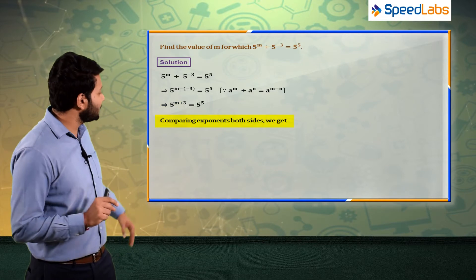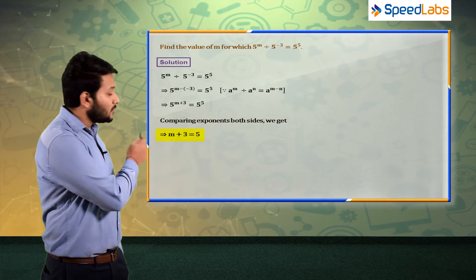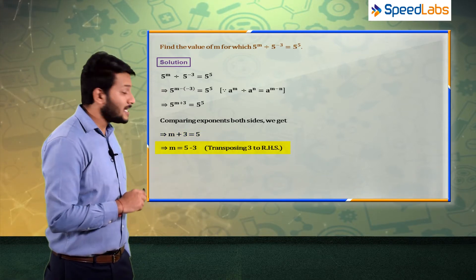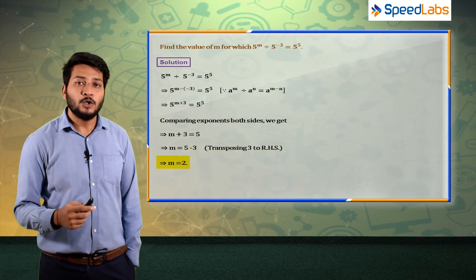So let us do this step. If you compare left hand side to right hand side, m plus 3 must be equal to 5. So here on the left hand side, m will be 5 minus 3. So m value here on the left hand side is equal to 2.